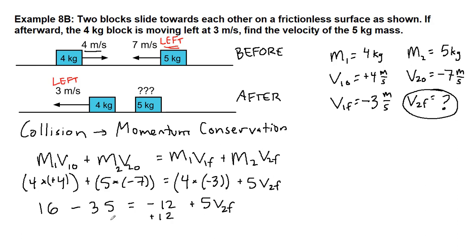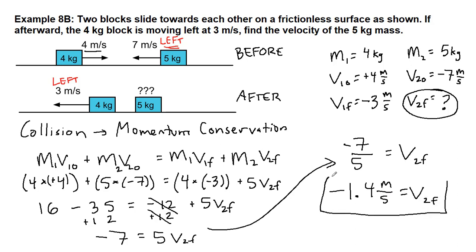So we can add 12 to both sides, and so it cancels out over here. 16 minus 35 plus 12 still ends up being negative 7 equals 5v2f. If we divide both sides by 5, negative 7 fifths is what we have as our final answer. You can leave it like that. I like to put it in decimal form. Negative 1.4 meters per second is v2f.